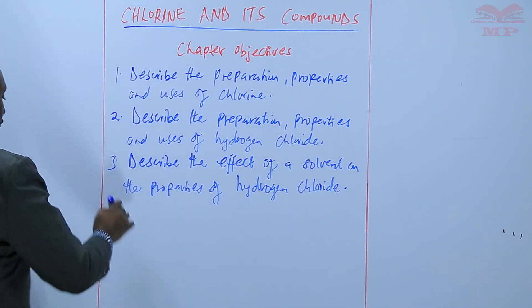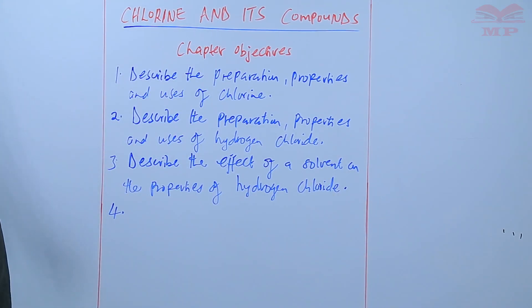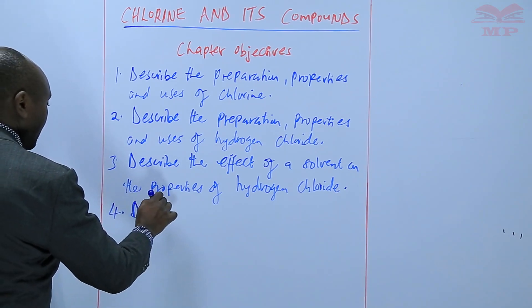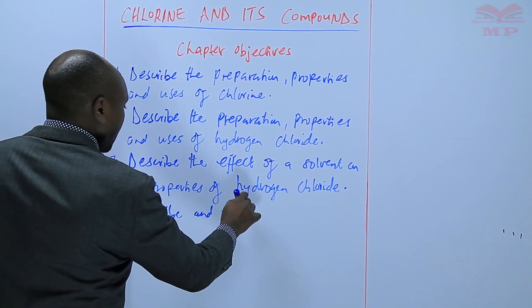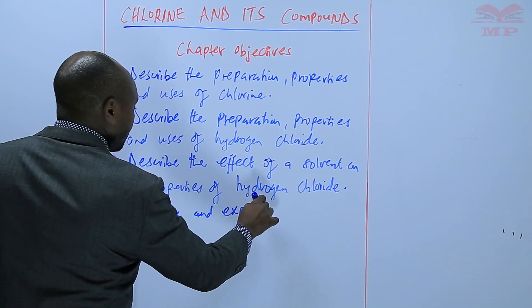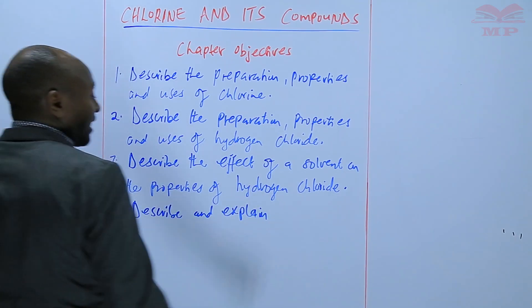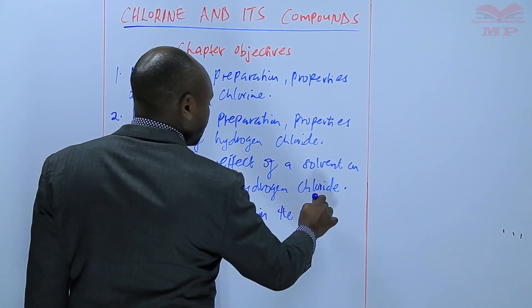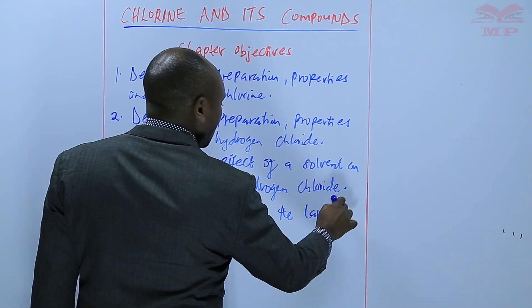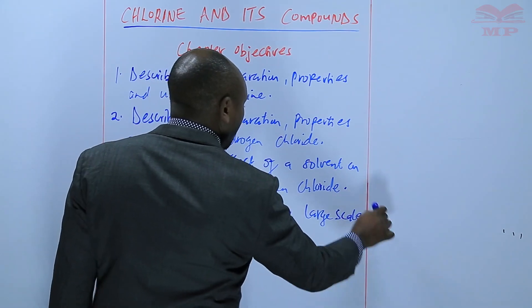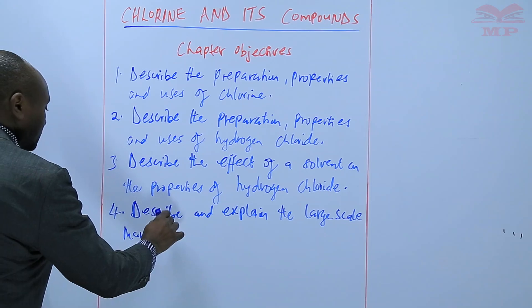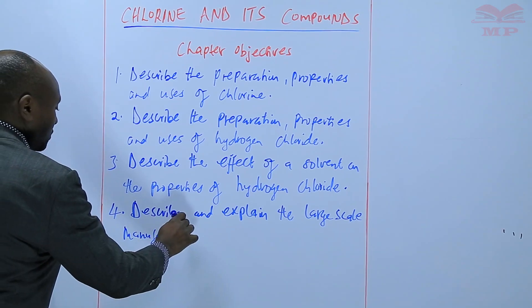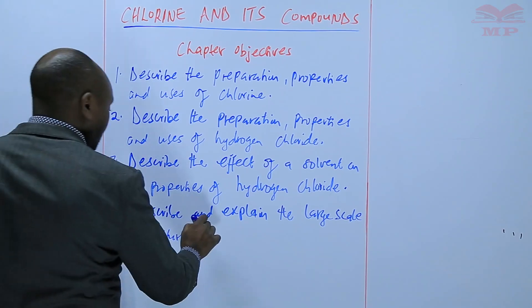Number four is to describe and explain the large-scale manufacture of hydrochloric acid.